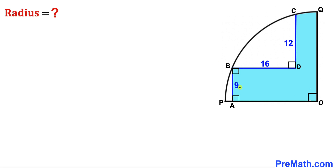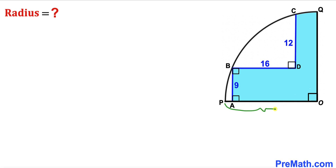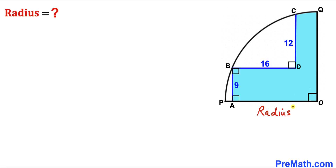Welcome to PreMath. In this video we have a bunch of line segments AB, BD and CD fully confined in a quarter circle, as shown in this diagram, such that segment AB is 9 units, segment BD is 16, and segment CD is 12. All of these angles are 90 degrees. OP and OQ are both radii of this quarter circle, and our task is to calculate the radius of this quarter circle.